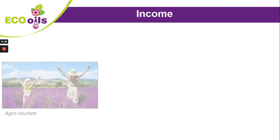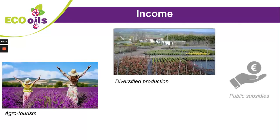Finally, income. Income from production mainly comes from the commercialization of organic plants or essential oils produced. Moreover, agrotourism is a new way for producers to add value to their work and production. It's also a profitable way to communicate about your product. Don't forget that organic agriculture is often subsidized, which increases its total gross product.